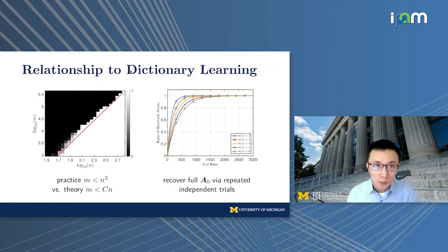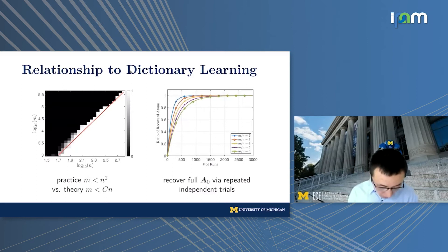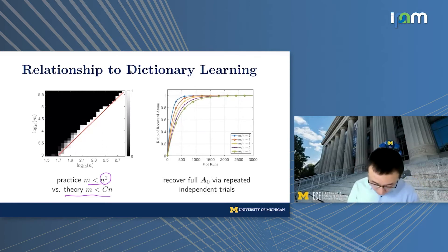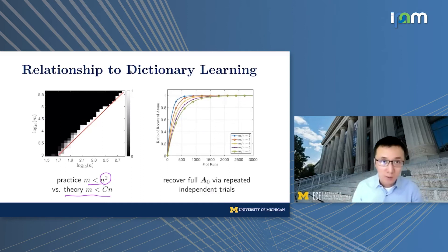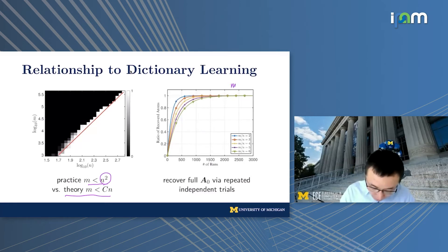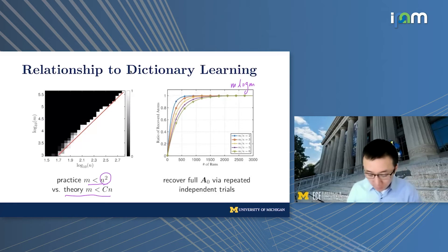We do simulations to plot the phase transition of the over-completeness we can deal with. It seems that our theory says the over-completeness is only a constant, but in practice, gradient descent methods work in a much larger regime — probably around N to N squared. For recovering all tensor components, since every local minimizer corresponds to one component up to sign ambiguity, you can use random initialization and repeat. Running M log M independent trials, you can recover almost all tensor components.